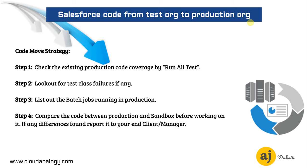Step 1: Check the existing production code coverage by running all tests — we should absolutely make sure that before deployment we run all tests in production and find out if any code is breaking or if there are any test class failures, then report it to the manager and end client. Step 3: List out the batch jobs running in production, to identify which batch jobs may need to be deactivated during deployment. Step 4 is also mandatory: compare the code between production and sandbox before working on it — if any difference is found, report it to your end client and manager.